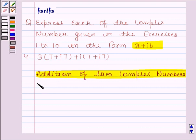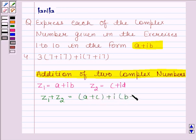If Z1 equals A plus iota B and Z2 equals C plus iota D are any two complex numbers, then their sum, Z1 plus Z2, is defined as (A+C) + iota(B+D).